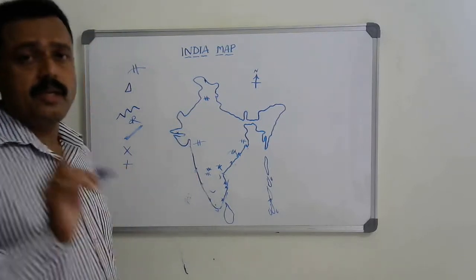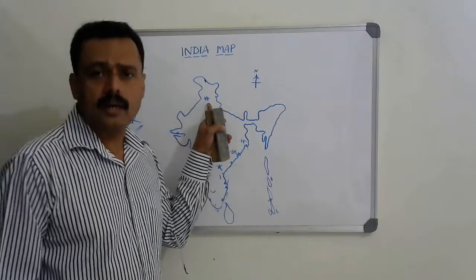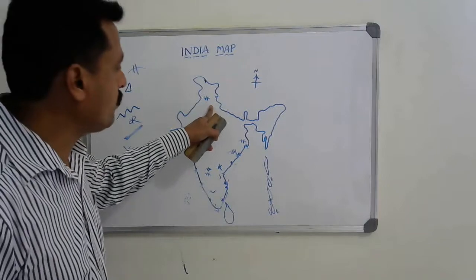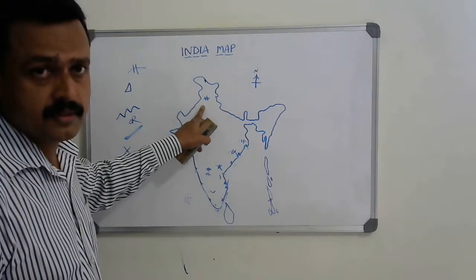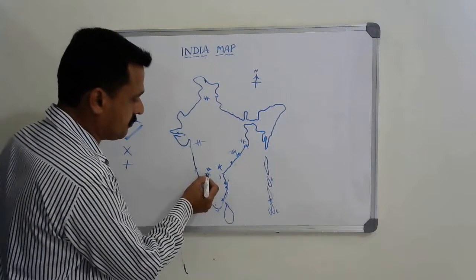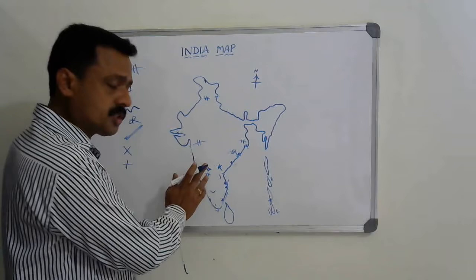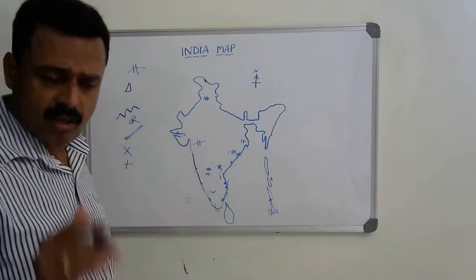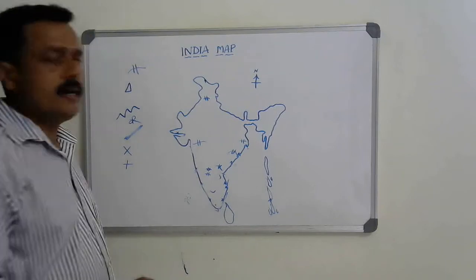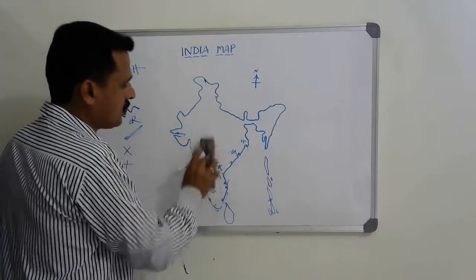Remember: instead of asking Bakra Nangal dam, they may ask Gobind Sagar — show the same dam location. They may ask Pampa Sagar in Karnataka. If it falls inside Karnataka or north Karnataka, they will give marks. These are the multi-purpose river valley projects and how to show them.